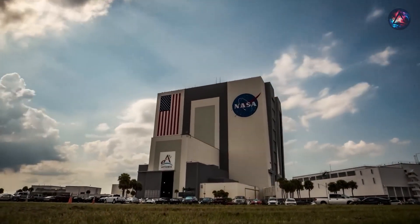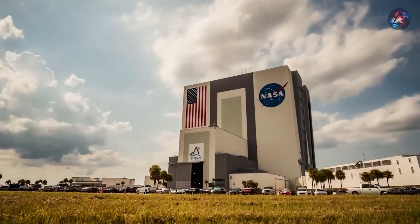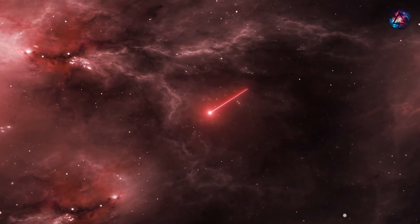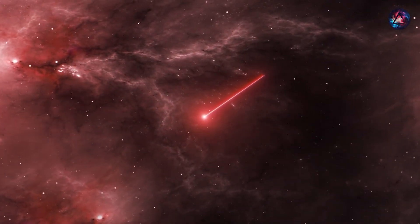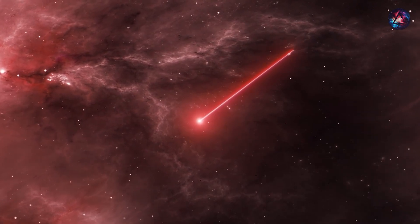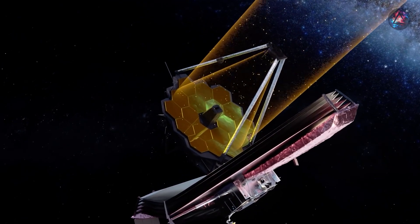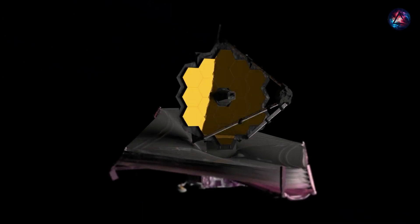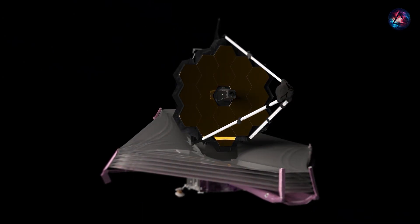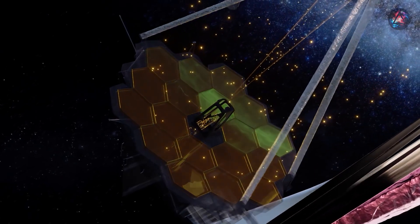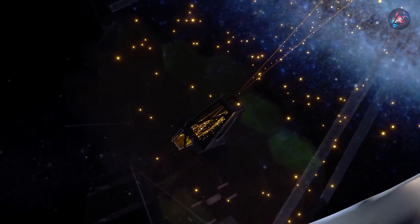As for why NASA opted to emphasize infrared light, the primary rationale lies in the fact that infrared light possesses longer wavelengths than visible light. Most infrared light from space is impeded by Earth's atmosphere, necessitating a specialized telescope like the JWST to capture it. Even at the size of our bucket, six meters across, we're only collecting about one photon per second, one particle of light per second.